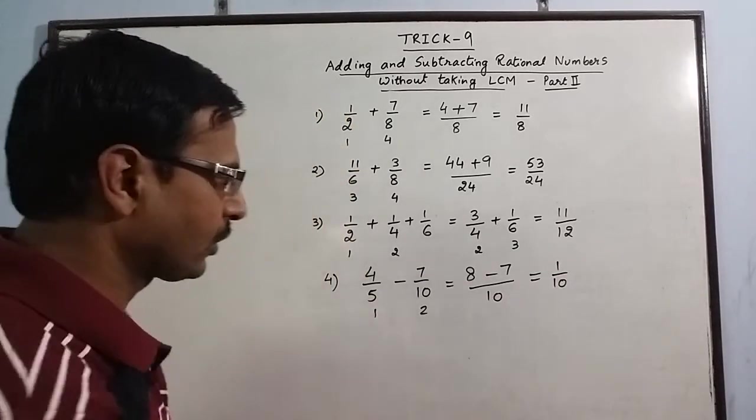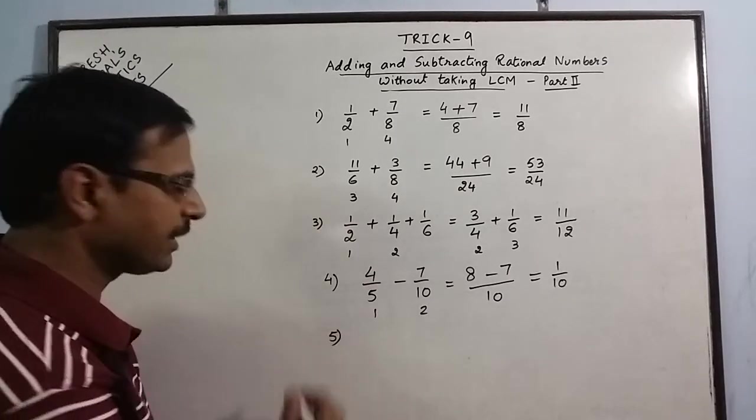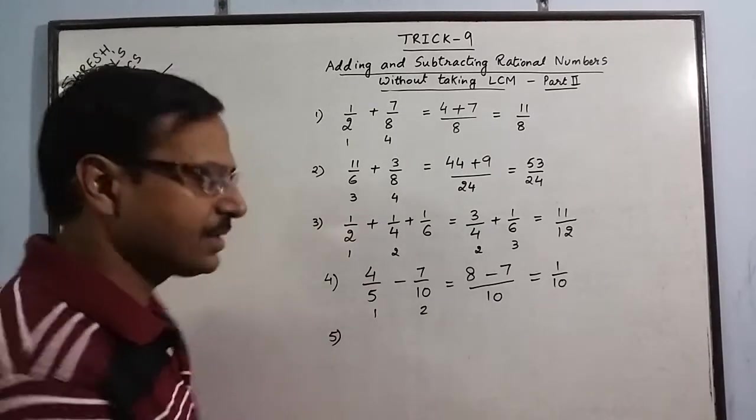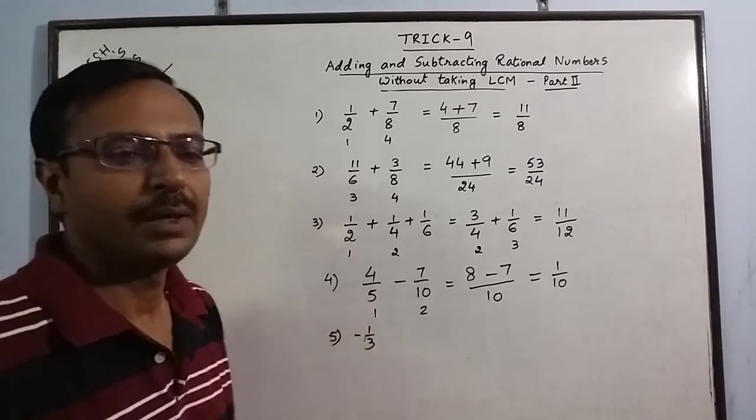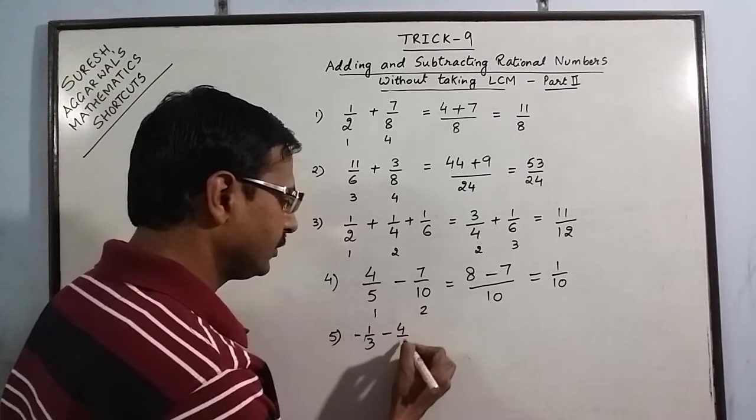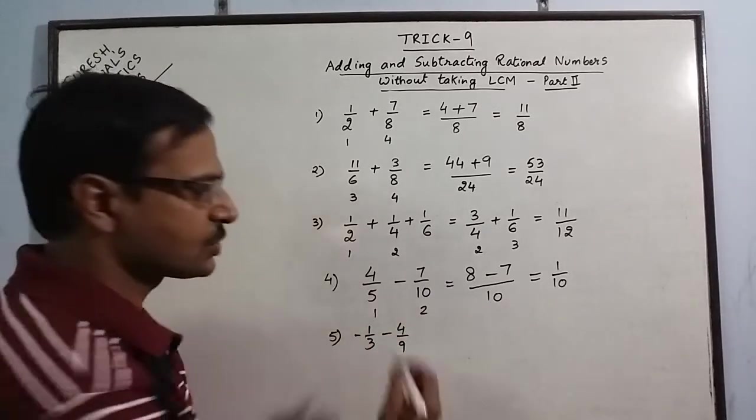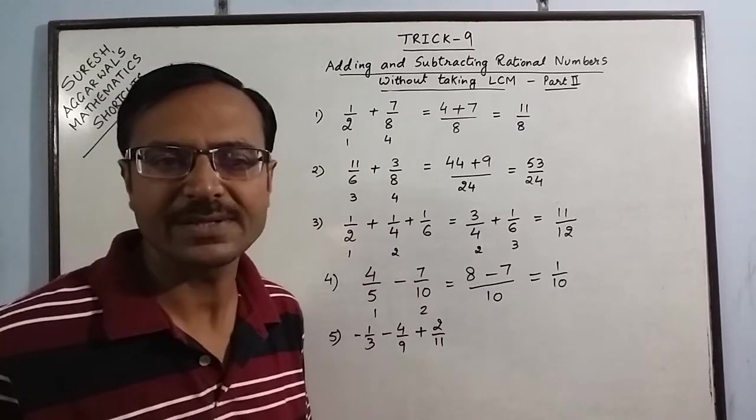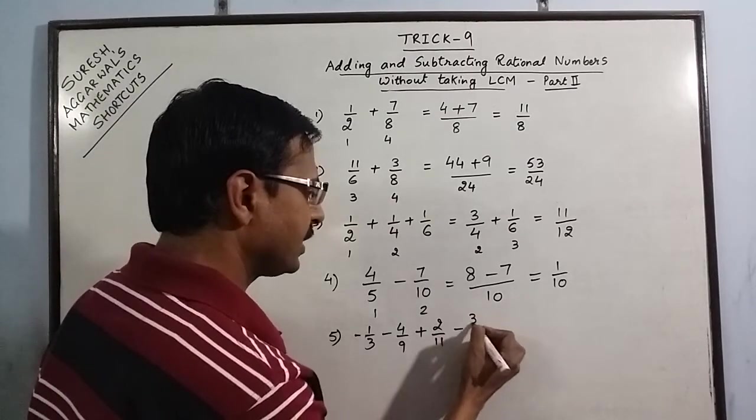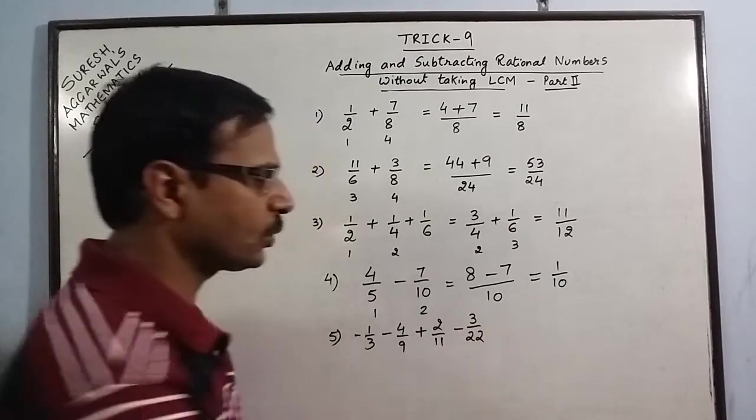Let us take one more little bit complicated example. Say we have minus 1 by 3 minus 4 upon 9 plus 2 upon 11 and we have one more factor, say minus 3 upon, I will take a larger denominator, 22.